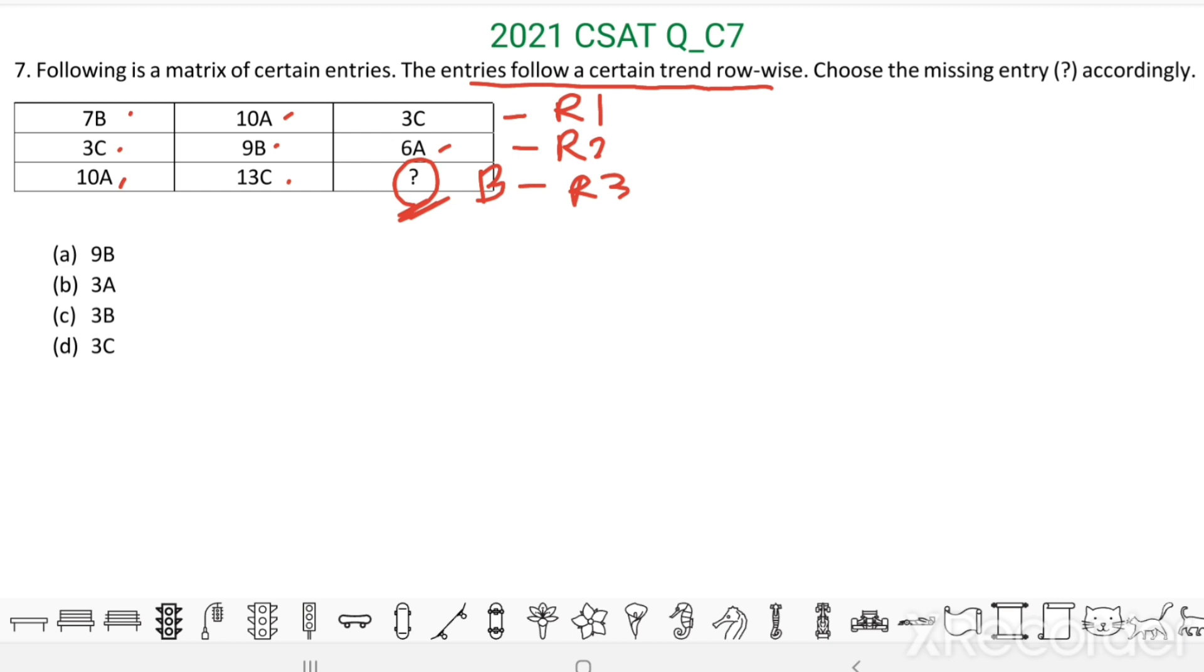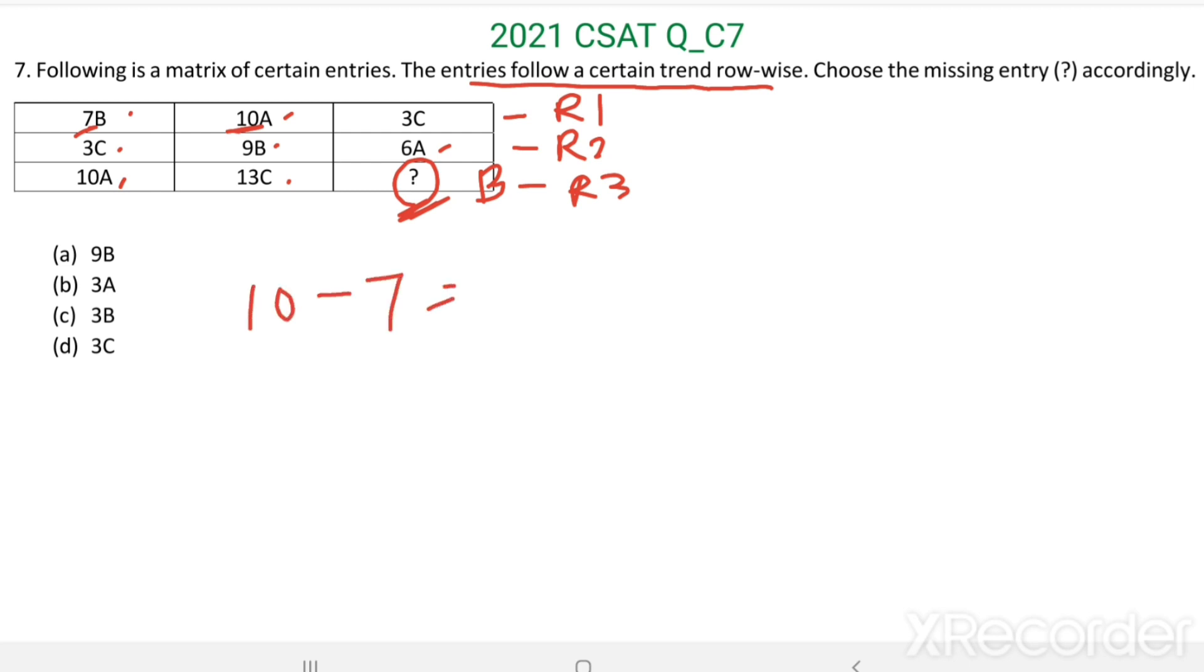Then we have to find the number. Ten minus three, ten minus seven. We get ten minus seven, we get three. This is from row one.